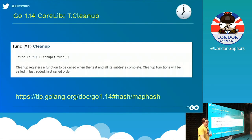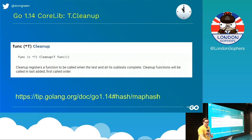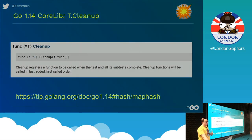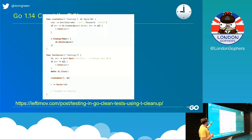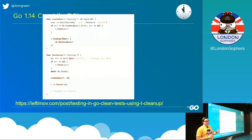The other interesting one I quite like: Cleanup. There's a new t.cleanup function in the testing package and the benchmark package. This allows you to much more efficiently clean up after running tests — it runs all the tests and subtests within that test and then cleans up. At the minute, to clean up tests you'd probably do something with a defer. However, now you can call t.cleanup and do it in context, which is quite nice.